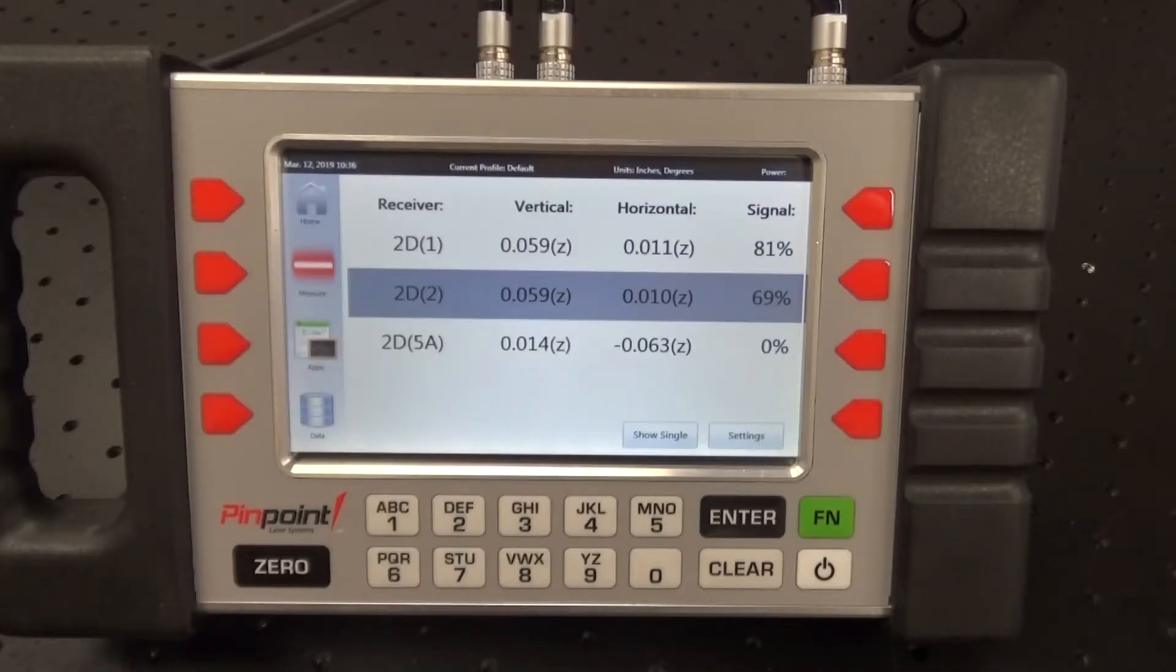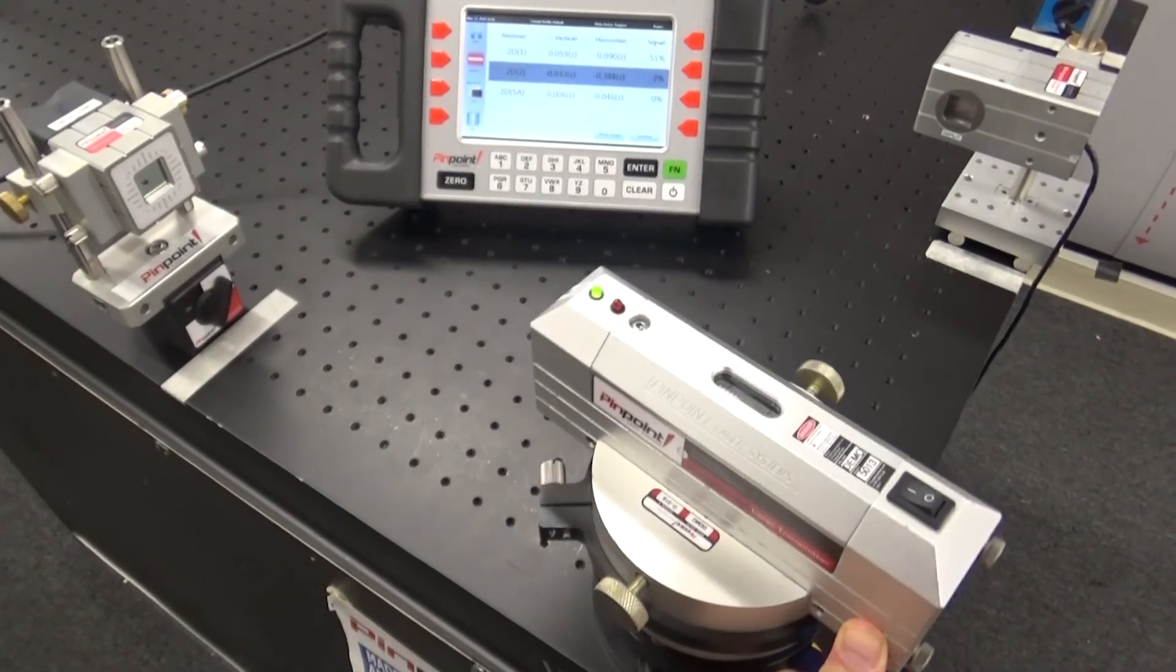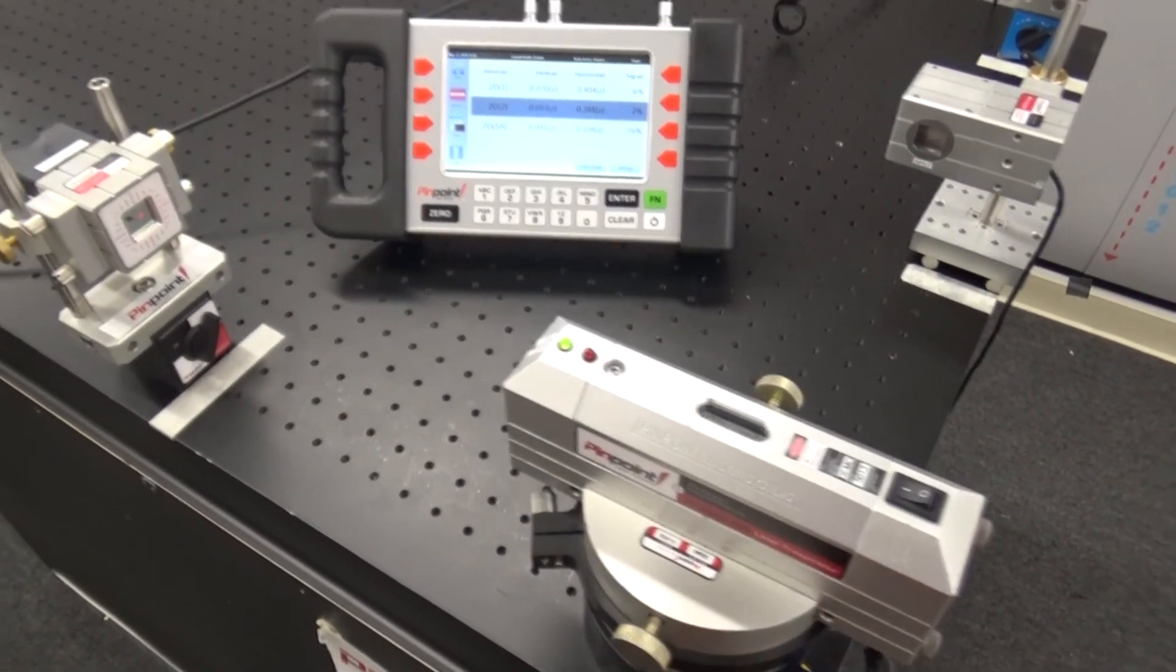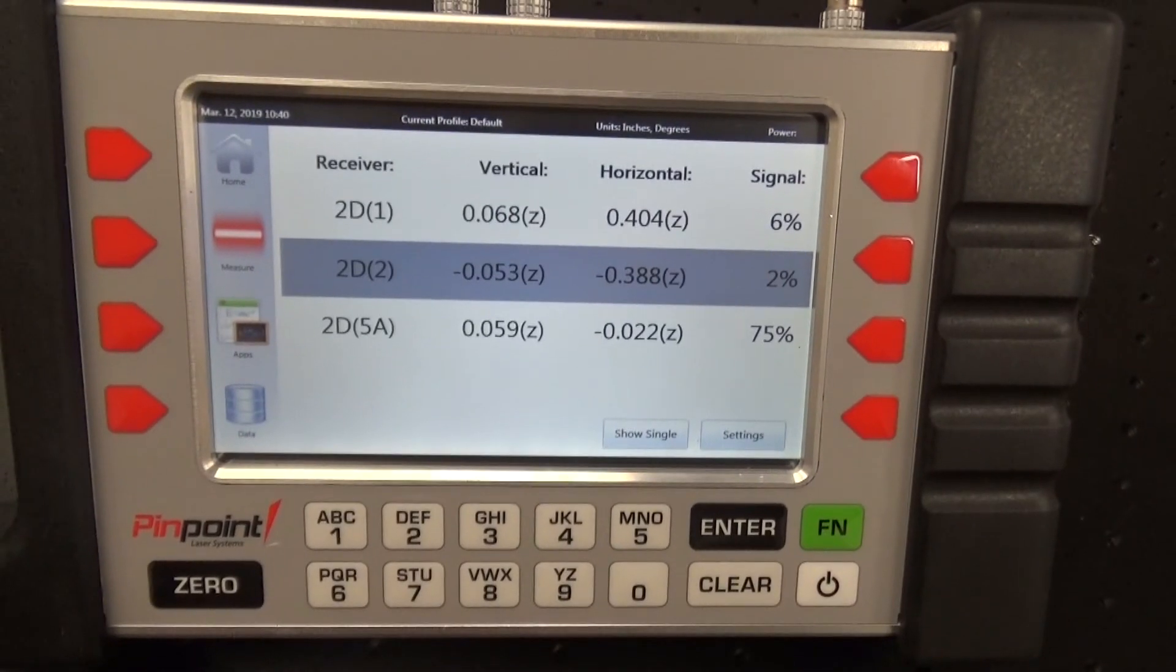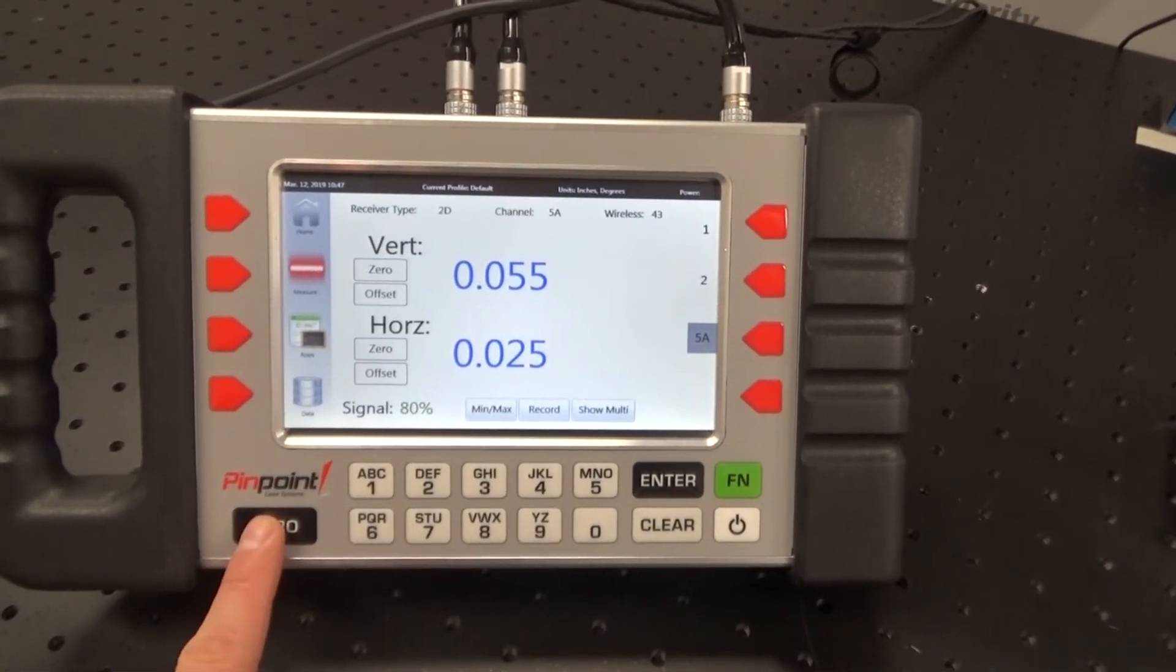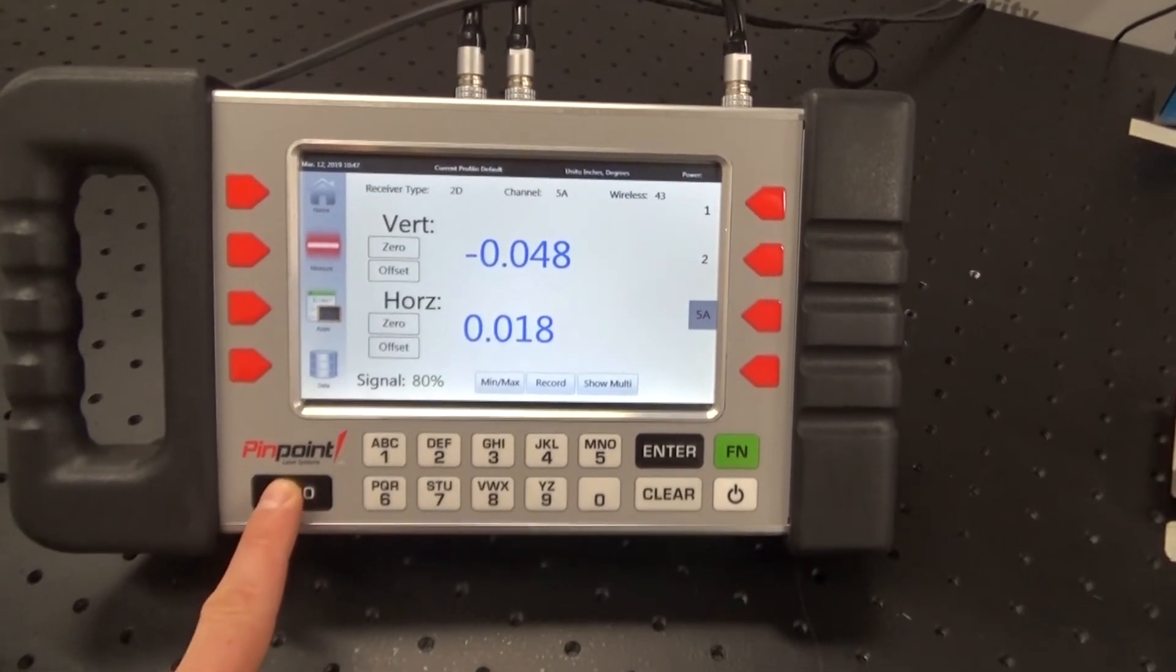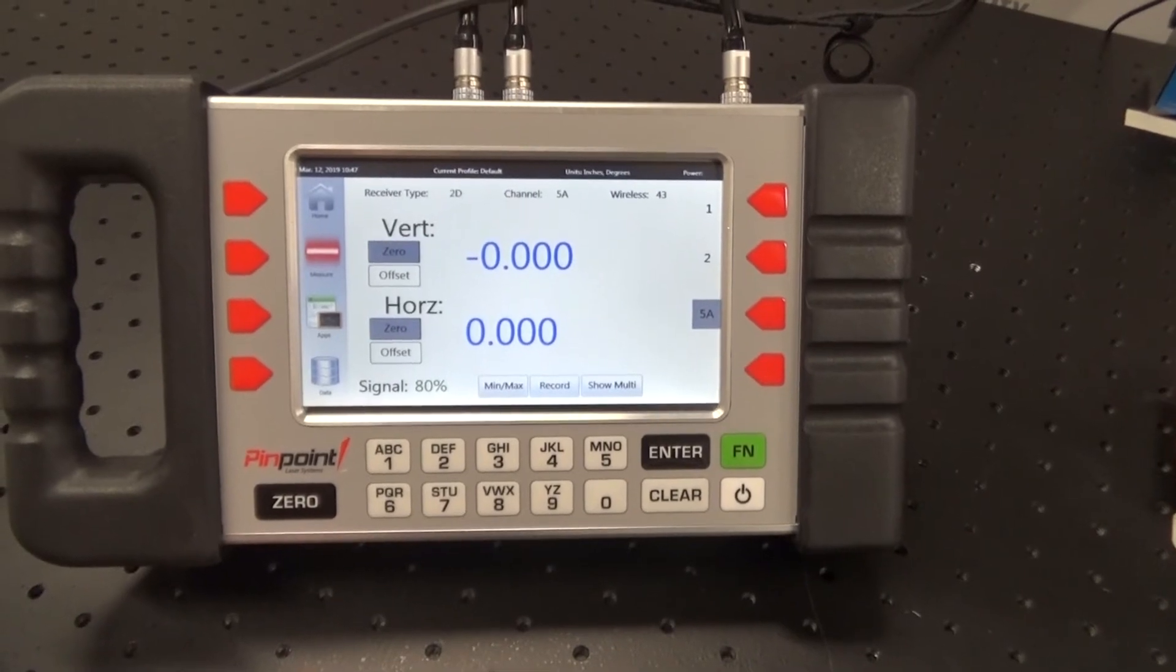Then rotate 90 degrees and adjust one of the side knobs to match this reading to 59 thou. This process can take a few iterations, but it is fairly quick. Once all three receivers are matched vertically, we are bucked into the table and we can zero out the readings again.